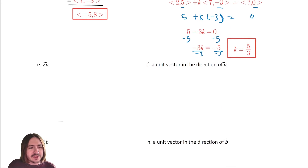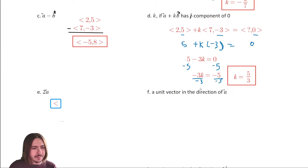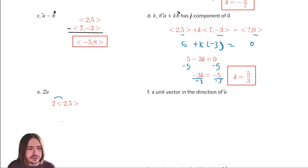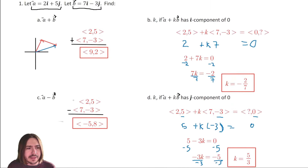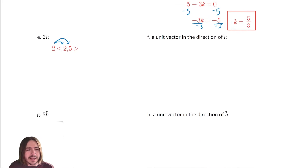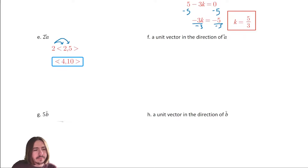Letter E: multiply a scalar of two by vector A. We've got two times vector A which is two comma five. To multiply a scalar by a vector, you treat it like the distributive property — multiply each component by two. You would get four comma ten. I'm going to do G next, then F and H back to back.